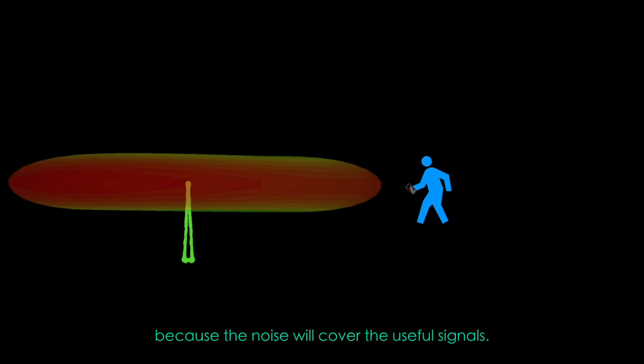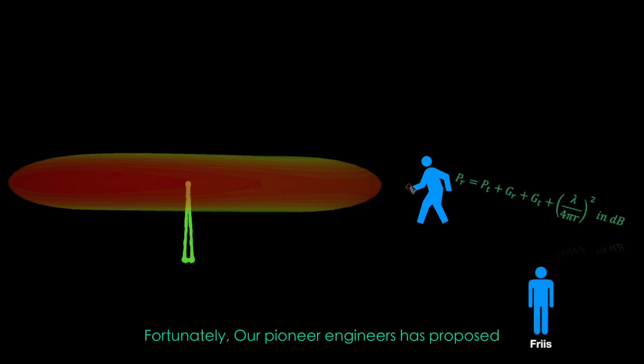Fortunately, our pioneer engineers have proposed the Friis transmission formula, which describes how strong the signals should be when they are successfully received by the devices. The Friis formula is quite intuitive. It inspired us and instructed us to increase the quality of the signal we can receive.